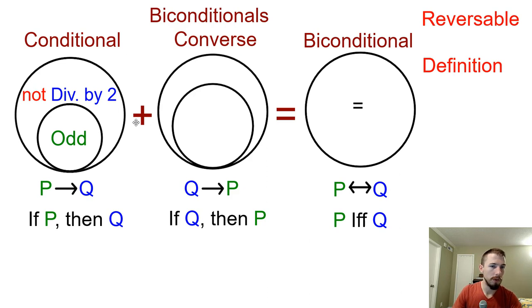So on just our quick review here, we have a conditional statement saying that if P then Q, or in other words, P implies Q. So if it's an odd number, then that means it's not divisible by 2. So what they're saying is that odd numbers are a subset of the numbers that are not divisible by 2. So the conditional statement is true.